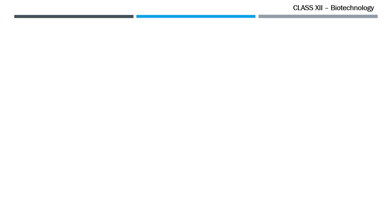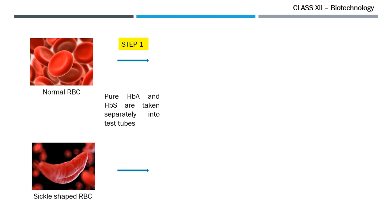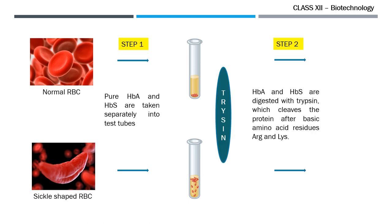As there was no mass spectrometer at that time, he combined two basic techniques: paper electrophoresis and the chromatographic technique. He took two samples — the normal RBC and the sickle cell RBC. First, he isolated pure hemoglobin from both samples into different test tubes. Then he treated both hemoglobins with the proteolytic enzyme trypsin, which cleaved the protein after the basic amino acid residues arginine and lysine, generating a number of peptide fragments.